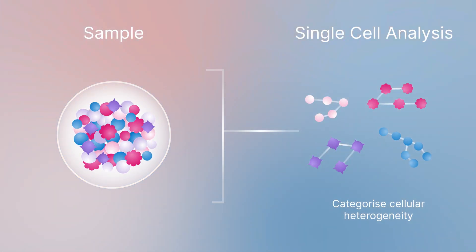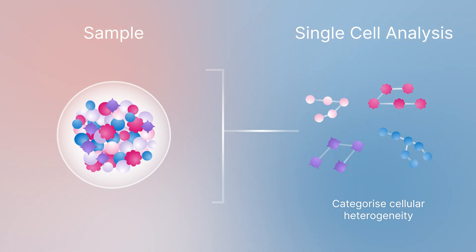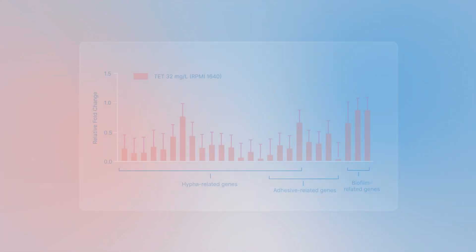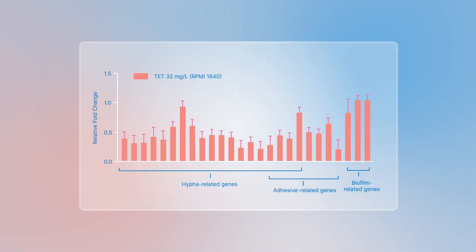But in cases when heterogeneity of the sample is important, emerging technologies now also allow for measuring expression of RNA in individual cells.